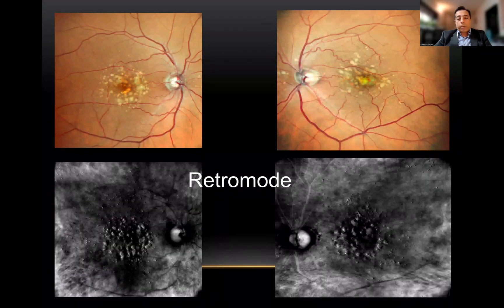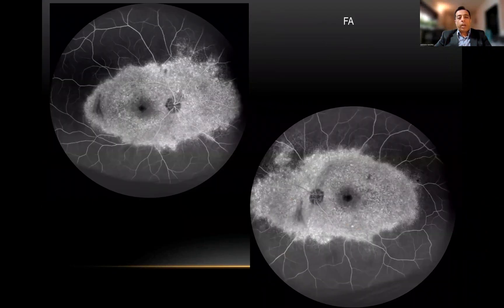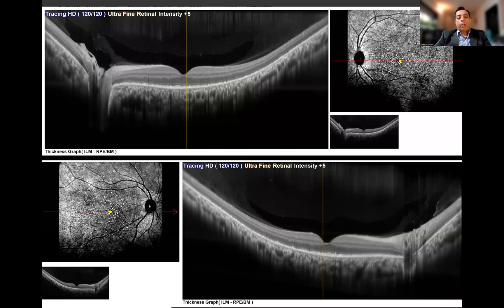Retromode is another aspect which gives beautiful lunar-like crater images of any elevations. Most of the time, the drusens stand out quite clearly and give very impressive pictures. We had a patient of presumed tenofovir toxicity with very subtle macular changes, but when you do the FA you can see how well-demarcated the whole deposits look, and the OCT shows stippling in the region as well to confirm the diagnosis.